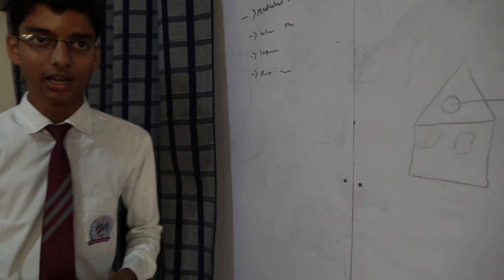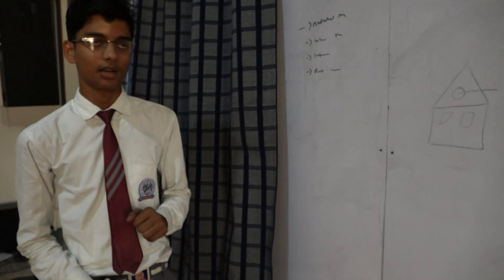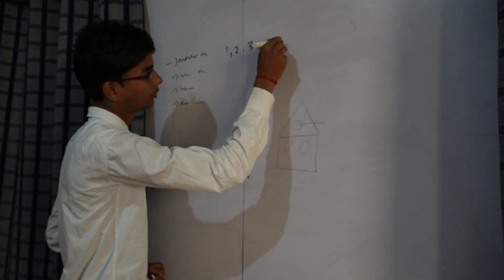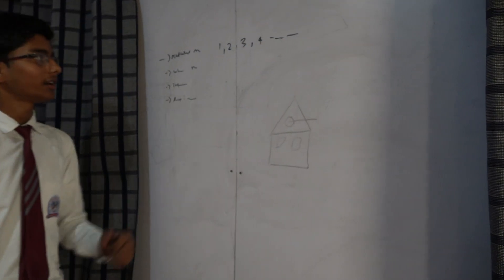As we know that, the counting number is known as natural number. For example, 1, 2, 3, 4, etc. is known as natural number.